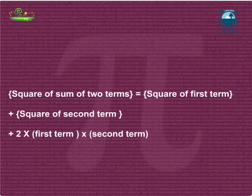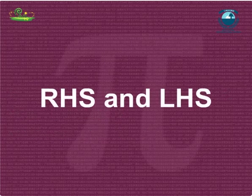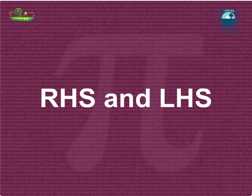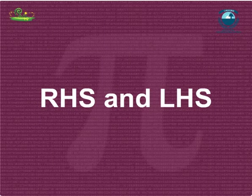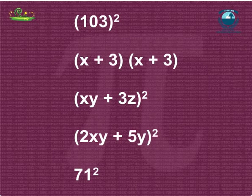So, we can say that the square of the sum of two terms equals the square of the first term plus the square of the second term plus 2 times the product of the first and second terms. Clearly, this is an identity since the expression on the right-hand side is obtained from the left-hand side by actual multiplication. For many problems, use of the identities gives a simple alternative method of solving them.